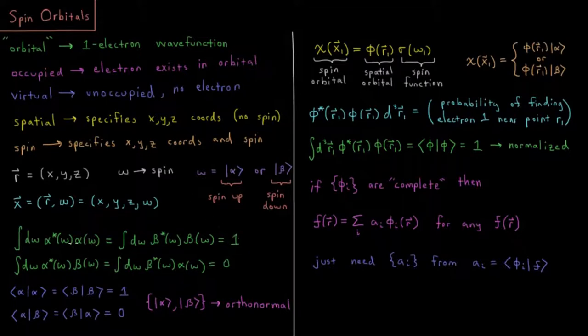And then when you do alpha star times beta or beta star times alpha, you end up getting 0, showing that those two are orthogonal to one another. Put those two facts together, this means that alpha and beta are orthonormal.